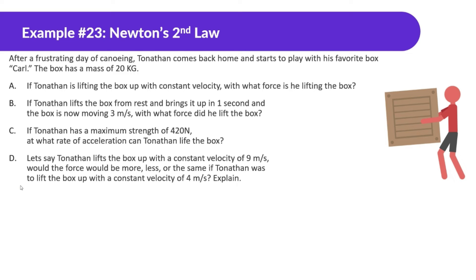After a frustrating day of canoeing, Tonton comes home and plays with his favorite box, Carl. The box has a mass of 20 kilograms. If Tonton is lifting the box with a constant velocity, with what force is he lifting it? Force of gravity is 20 times 10 equals 200 Newtons. Since acceleration is zero with constant velocity, force applied must also equal 200 Newtons.